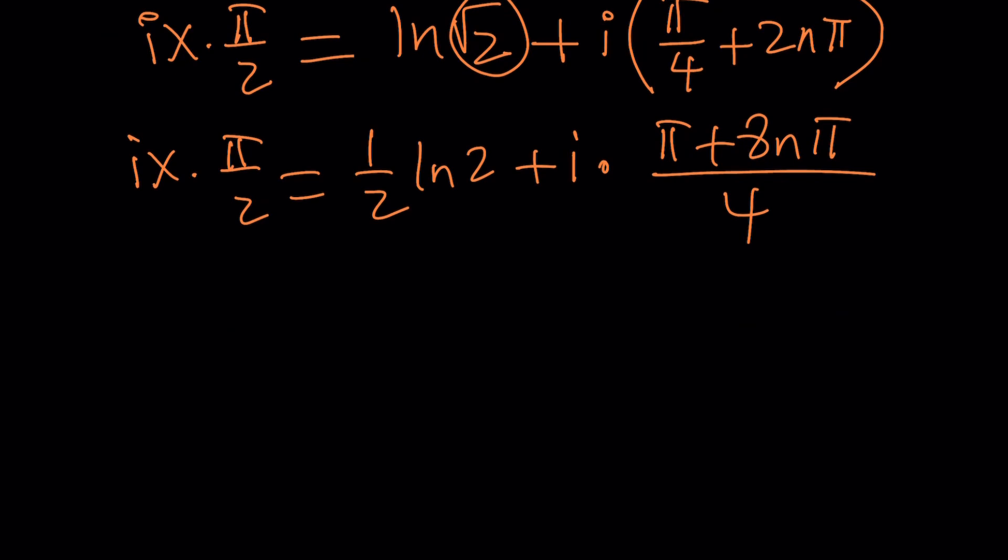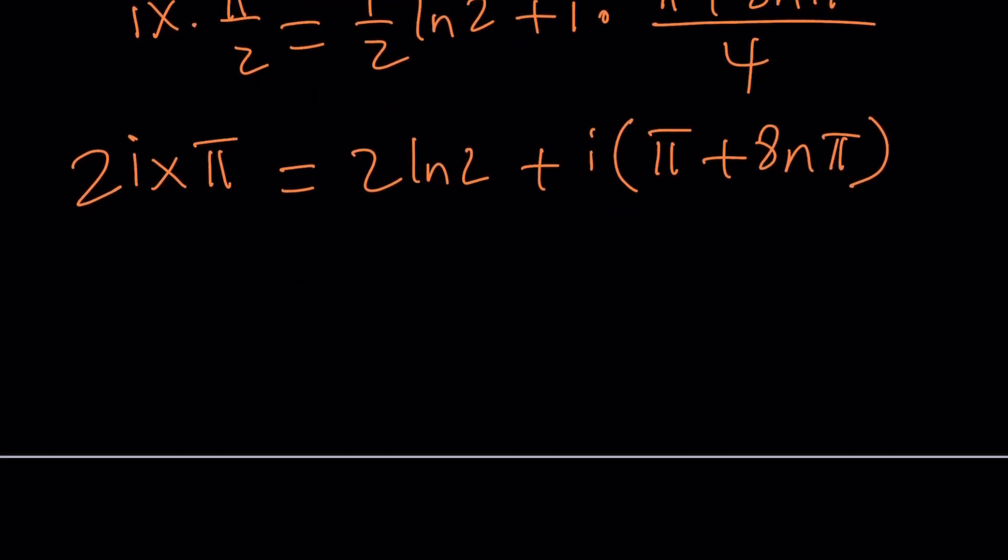And then I could probably make a common denominator here and write this as pi plus 8n pi over 4. Now, I'd like to multiply everything by 4. When I multiply by 4, this is going to be 2 ln 2. And when I multiply by 4 here, the 4 at the bottom is going to cancel out. So we got rid of all the fractions.